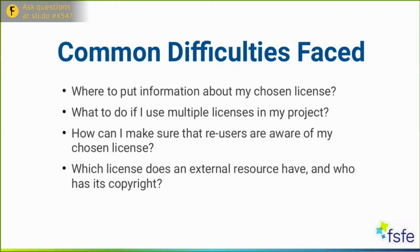The next problem is what to do if you have multiple licenses in your project. For example, let's say you've placed your code under the GPL 3 license, but you also have documentation licensed under a Creative Commons license. Now your project has two licenses. How should you convey this in your repo — should you have two license files?